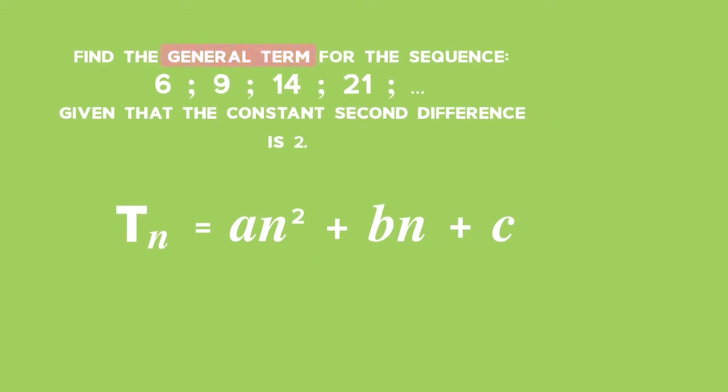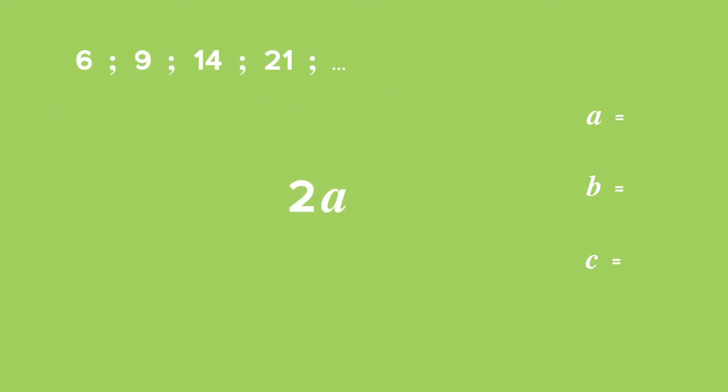So in order to work out the general term, we need values for a, b, and c. We also know that the constant second difference is equal to 2a, so that will help us find a value for a, because we know that the constant second difference for this specific sequence has been given as 2. So we can say the constant second difference 2a is equal to 2. Therefore, dividing both sides by 2, we will get that a is equal to 1.